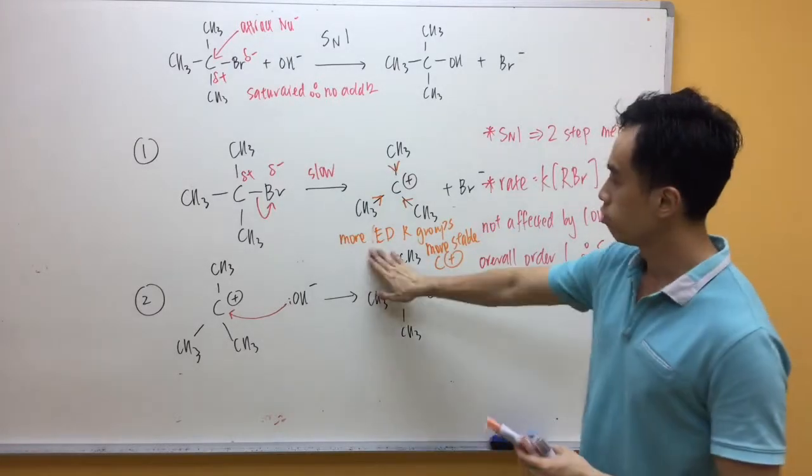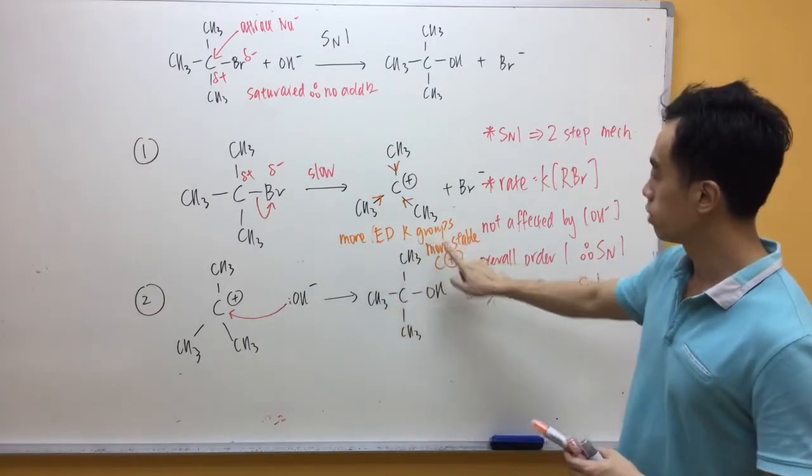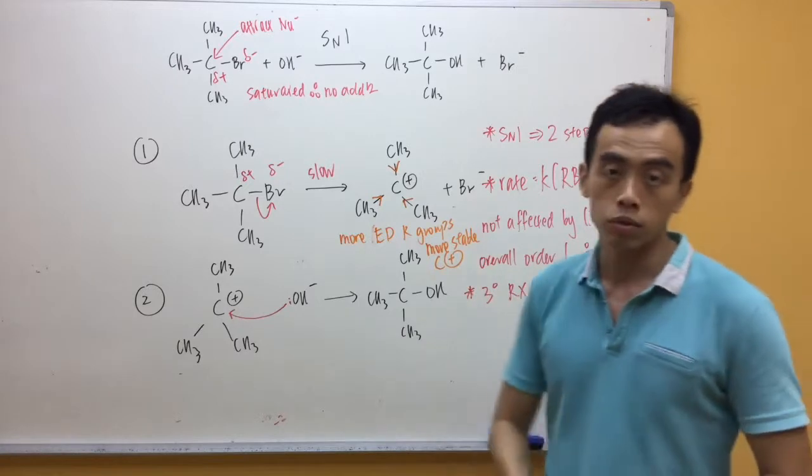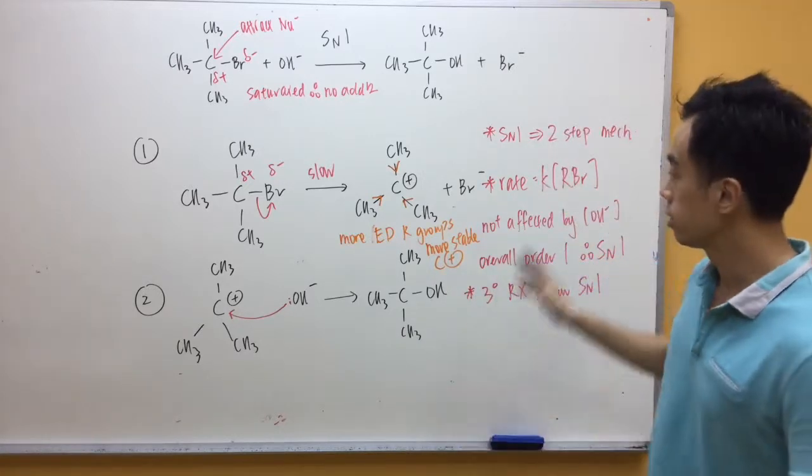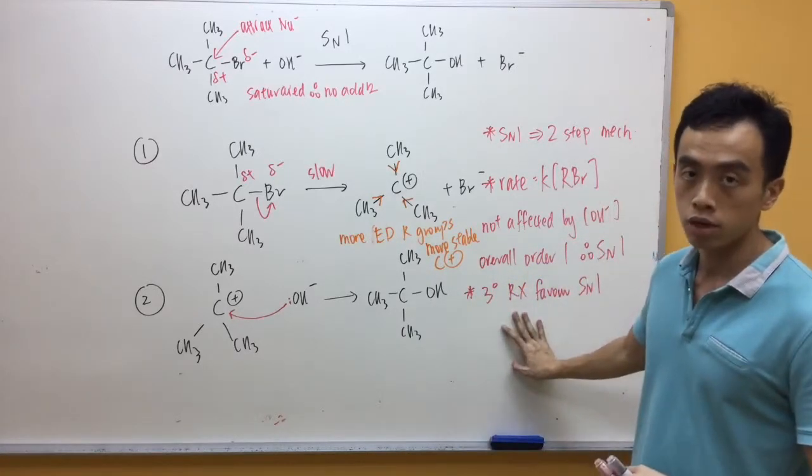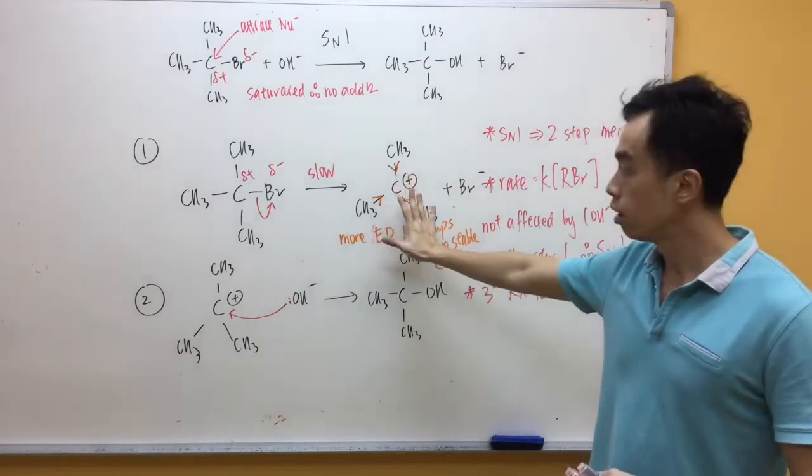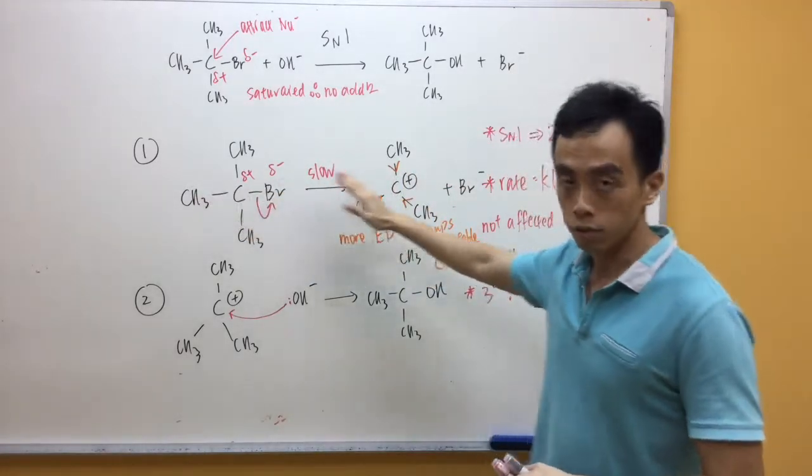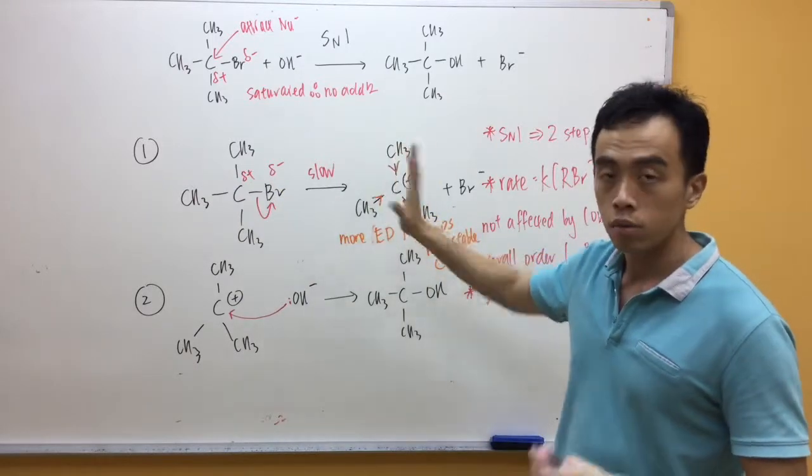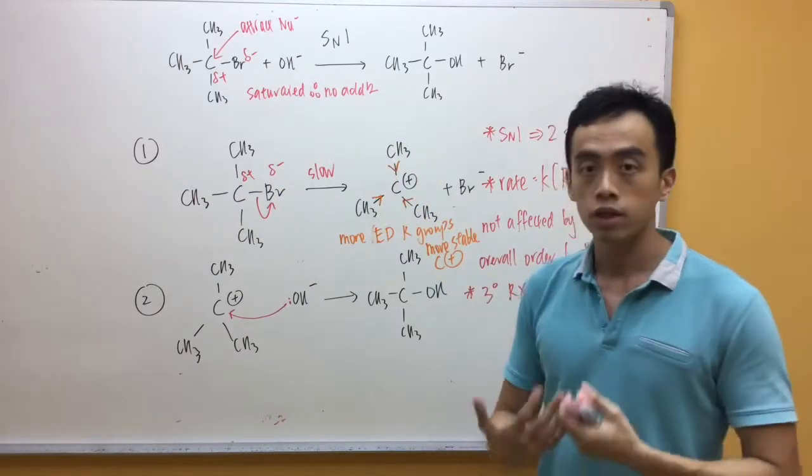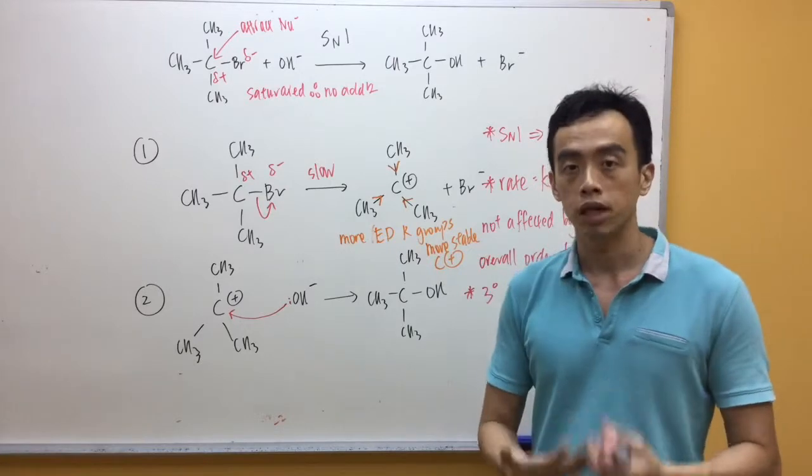What happens is it will make this C⁺ less positive. Therefore, it stabilizes the carbocation. In general, the more R groups that attach to this particular C⁺, the more stabilizing it is. It's written here as more electron-donating R groups, more stable carbocation. What this means is my tertiary halogenoalkane will form a more stable carbocation. It actually favors the formation of my carbocation because it's more stable, so it will favor the SN1 mechanism.